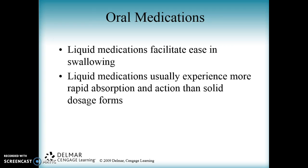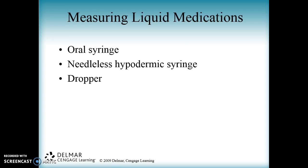Liquids are a lot easier to swallow for children and they also have more rapid absorption rates. We will typically be using oral syringes for liquid medications, which is basically a needleless syringe. For even smaller children — infants — we use droppers, which have a smaller calibration so we're able to be more precise with the measurement of that medication.